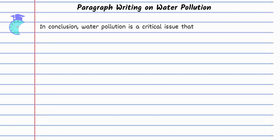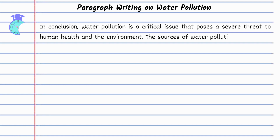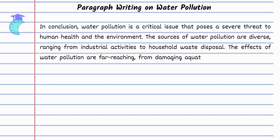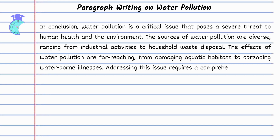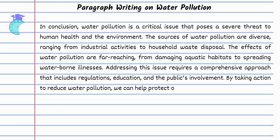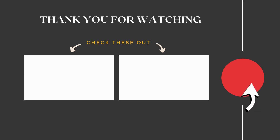In conclusion, water pollution is a critical issue that poses a severe threat to human health and the environment. The sources of water pollution are diverse, ranging from industrial activities to household waste disposal. The effects of water pollution are far-reaching, from damaging aquatic habitats to spreading waterborne illnesses. Addressing this issue requires a comprehensive approach that includes regulations, education, and the public's involvement. By taking action to reduce water pollution, we can help protect our water resources and the health of people and the planet.